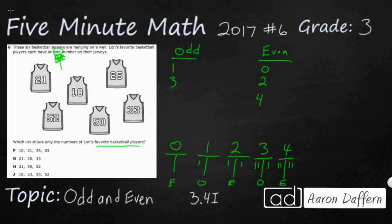So I'm guessing that 5 is going to be an odd number. 1, 2, 3, 4, 5 — yep, it's got 3 and 2, so it's odd. And you notice it goes back and forth. 6 should be an even number: 1, 2, 3, 4, 5, 6 — it is even because it's got 2 sets of 3.